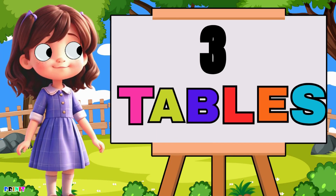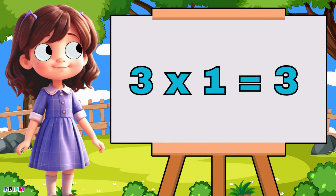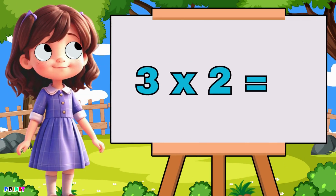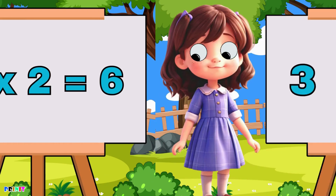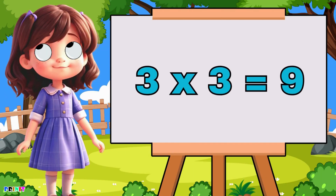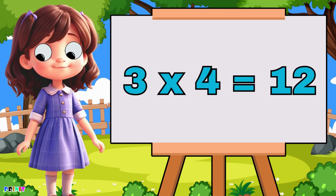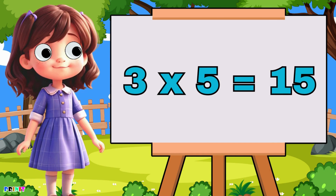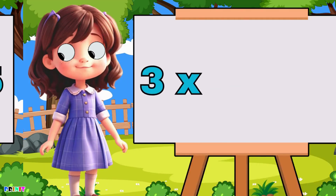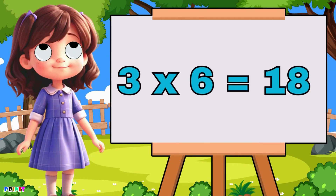Three tables. Three ones are three, three twos are six, three threes are nine, three fours are twelve, three fives are fifteen, three six are eighteen.